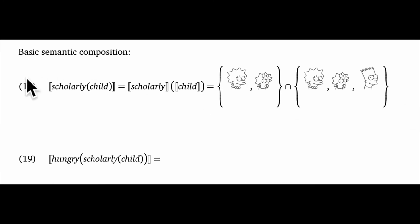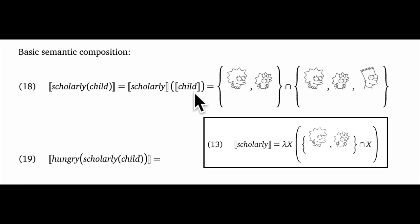Final observations about adjectives for now. We see how to interpret scholarly child. We do the two lookups for the lexical meanings, and then we apply scholarly to child, and that reduces down to this set intersection here. And we could of course reduce this further to just the set containing Maggie and Lisa.